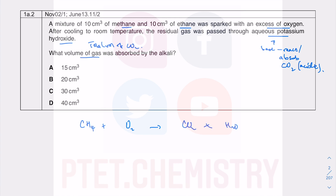Balancing CH₄ + O₂ → CO₂ + H₂O: carbon balances at 1, hydrogen requires 2H₂O, so you need 2 in front of H₂O. Oxygen: you need 2 + 1 = 2 O₂ molecules. For C₂H₆, you get 2CO₂ because there are two carbons, and 6 hydrogens gives 3H₂O.